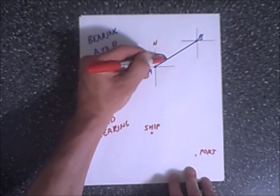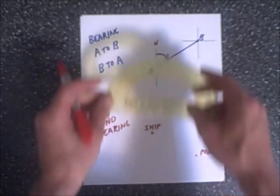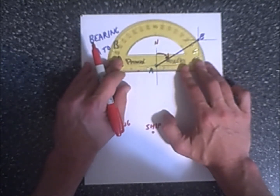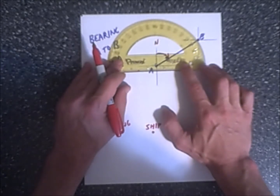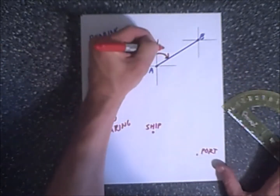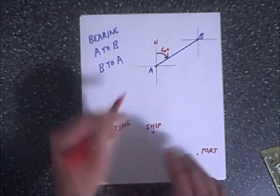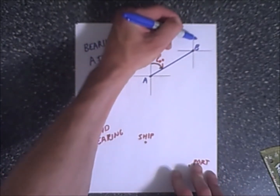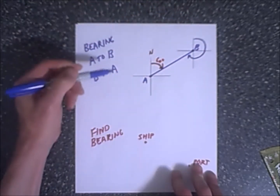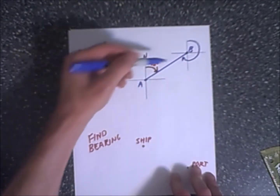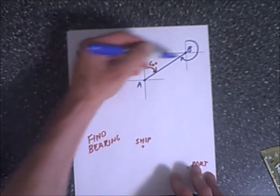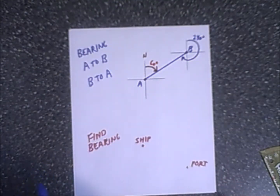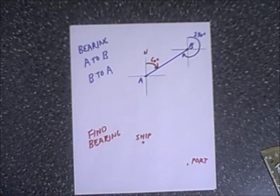Another important thing to remember is that bearings depend on the direction between two objects. If we have person A and person B and want the bearing from A to B, we start at north and go clockwise until we hit our direction — in this case roughly 60 degrees. But the bearing from B to A is not 60 degrees; starting at north and going clockwise, using alternate interior angles, we get 240 degrees. The difference is 180 degrees.